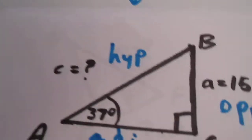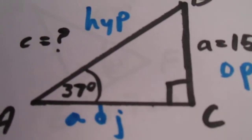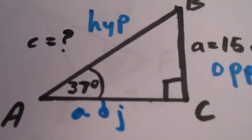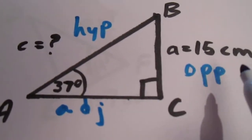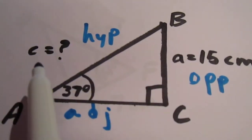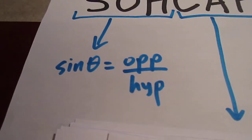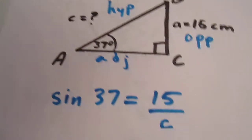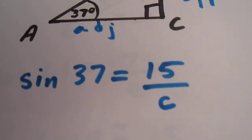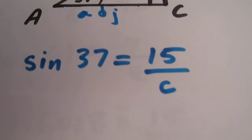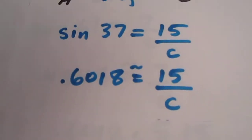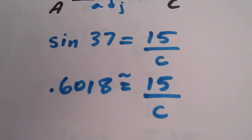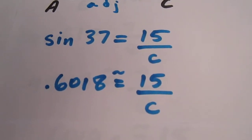We're going to use the sine trig ratio in this case, because sine involves the opposite and the hypotenuse. We're going to say that the sine of 37 must be equal to 15 over C, because the sine of an angle is the opposite side over the hypotenuse. So the sine of 37 equals 15 over C. The sine of 37 is approximately 0.6018, so 0.6018 equals approximately 15 over C.